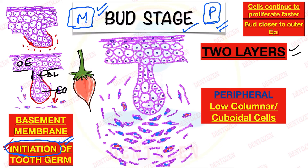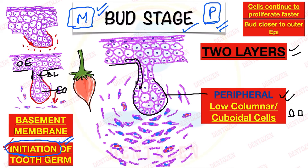The first layer is the peripheral cells. The peripheral cells of this bud-shaped enamel organ are low columnar and cuboidal in shape. That is your important viva question: what is the shape of the peripheral cells of the enamel organ in bud stage? These cells come from the overlying epithelium, so their shape is similar to those cells — they are low columnar and cuboidal cells.